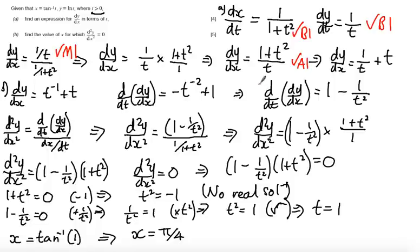In part b, there is a standalone mark for just getting the derivative of dy by dx with respect to t. There is then a method mark for correctly using the definition for d2y by dx squared, and finally there is an answer mark for getting to the correct derivative for d2y by dx squared. Finally, there is an answer mark if you got that t is equal to 1, and there is an answer mark if you got that x is equal to pi by 4.